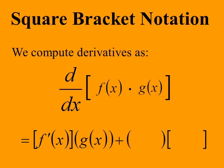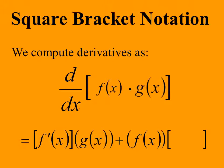Now we add to this the first function, f(x), which we put in the second pair of parentheses, times the derivative of the second function, g(x), which we put in the second pair of square brackets. That is, the derivative of the product of two functions is the derivative of the first times the second, plus the first times the derivative of the second.